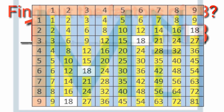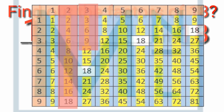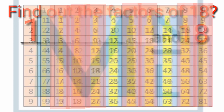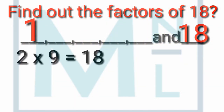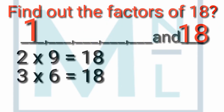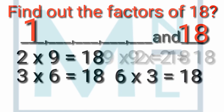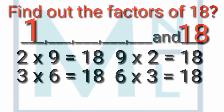Now looking at the tables, it is clear that 2, 3, 6, and 9 are also factors of 18. 2 times 9 is 18, 3 times 6 is 18, 6 times 3 is 18, and 9 times 2 is 18.